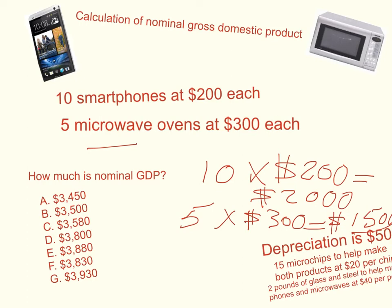If the question were to ask what is net domestic product: net domestic product is gross domestic product minus depreciation. For net domestic product, the answer would be 3,500 minus $50 depreciation, which would be $3,450. But here we're asking for gross domestic product, and so it's $3,500.